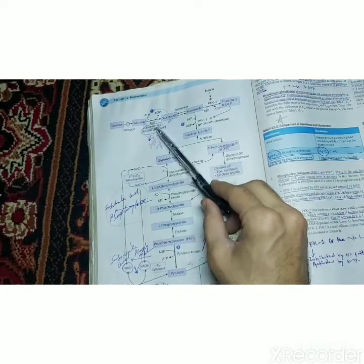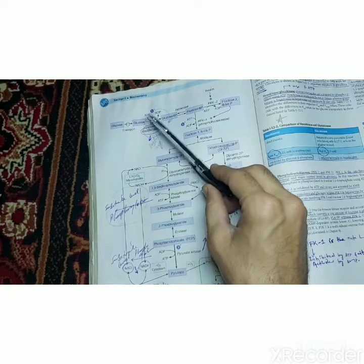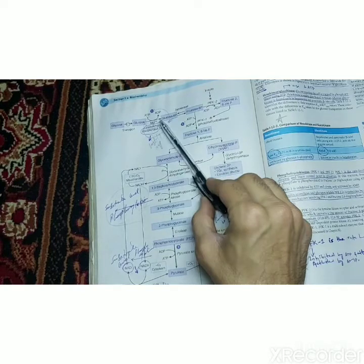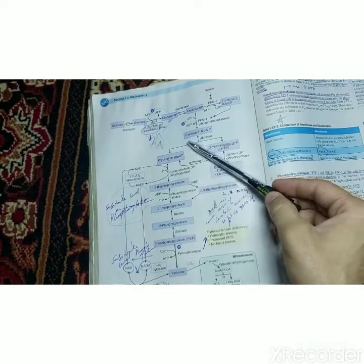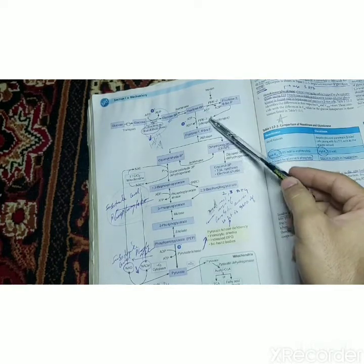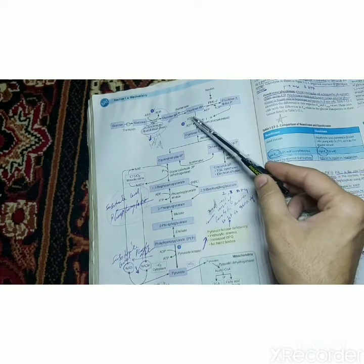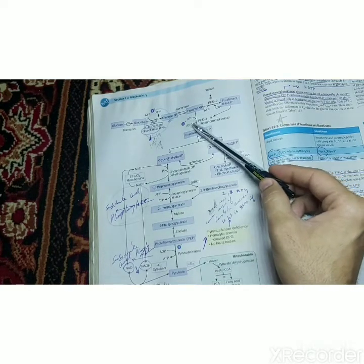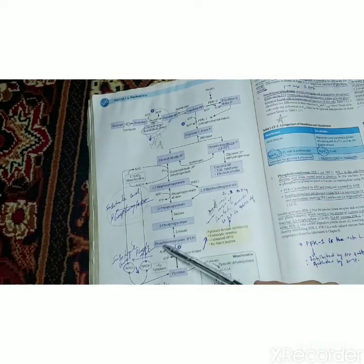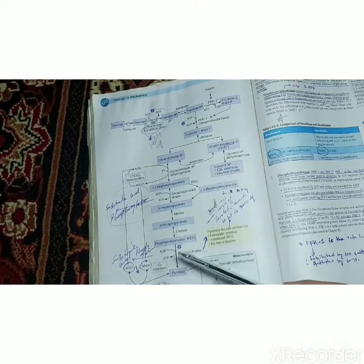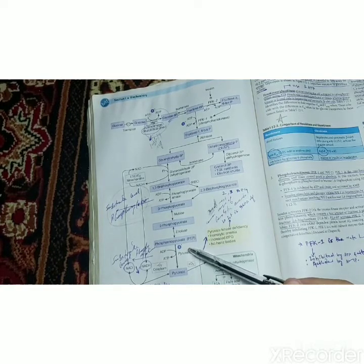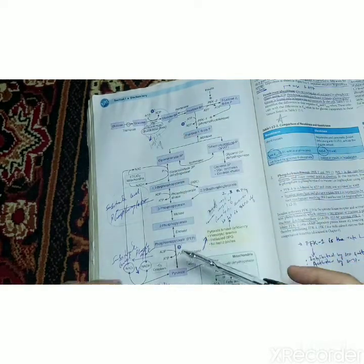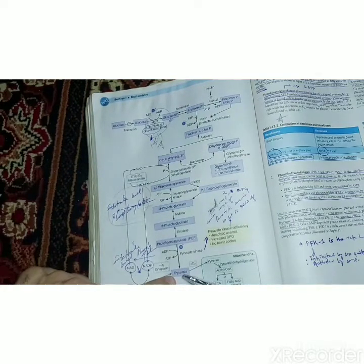The first irreversible step converts glucose into glucose-6-phosphate with the help of enzymes hexokinase and glucokinase, and it consumes one ATP. The second irreversible step converts fructose-6-phosphate into fructose-1,6-bisphosphate by phosphofructokinase-1 enzyme, and this step also requires an ATP. The third irreversible step converts phosphoenolpyruvate into pyruvate, and it also requires ATP.